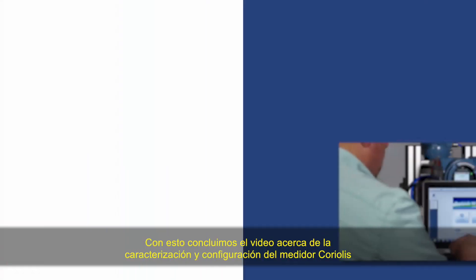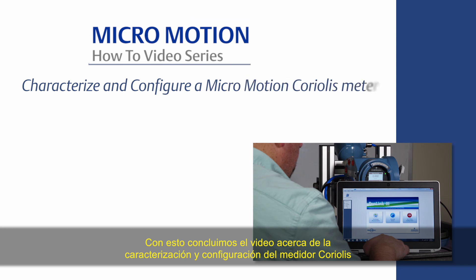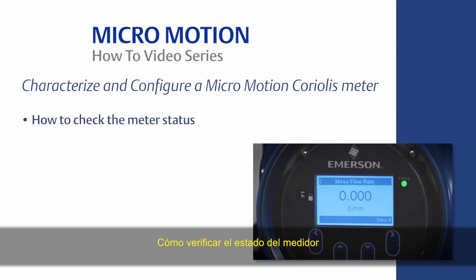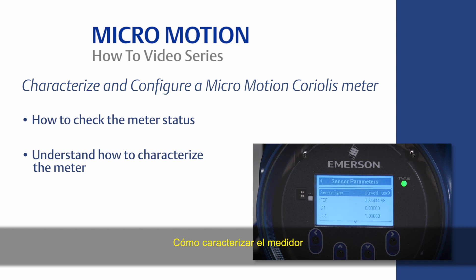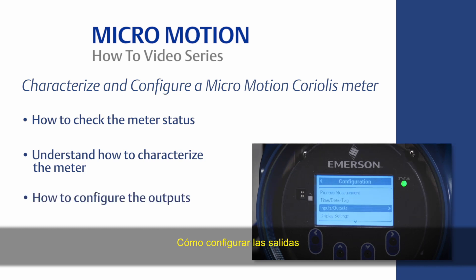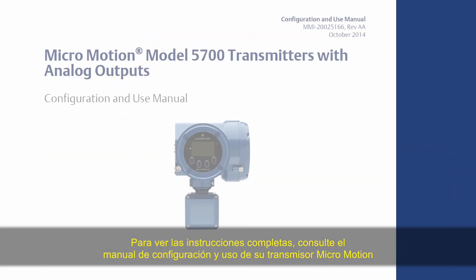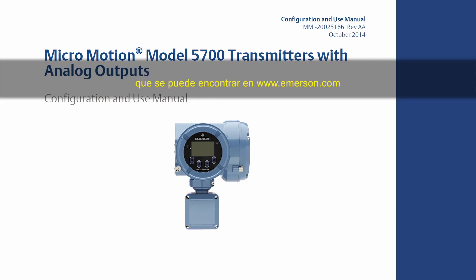This concludes the how-to video of Coriolis meter characterization and configuration. In summary, using ProLink software you should now know how to check the meter status, understand how to characterize the meter, know how to configure the outputs, and know how to save the characterization and configuration. For the complete set of configuration instructions, please refer to the MicroMotion Transmitter Configuration and Use Manual, which can be found on www.emerson.com.